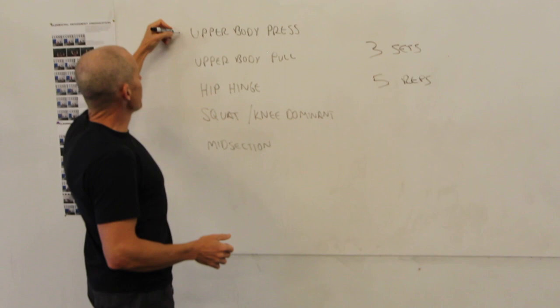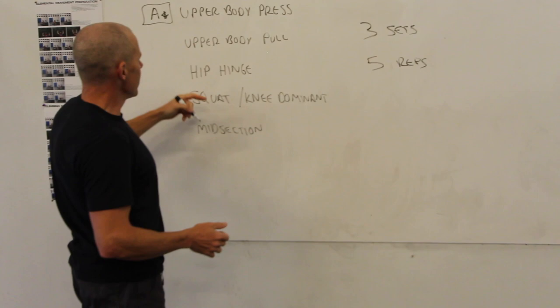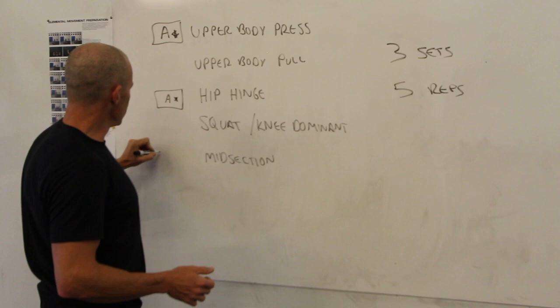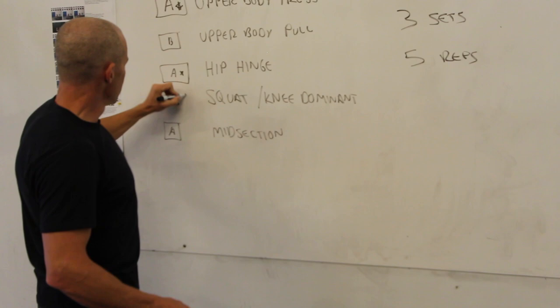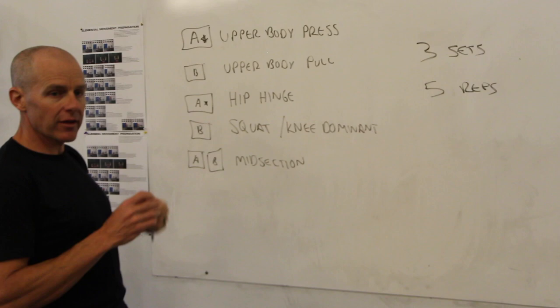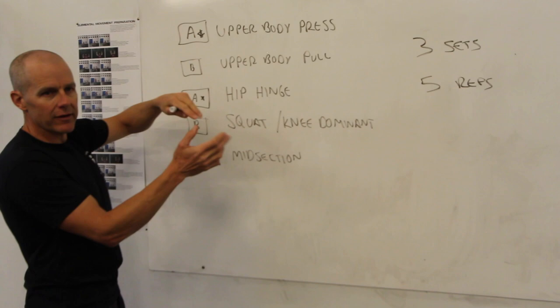Maybe we would do upper body press in our A group, and maybe the hip hinge would be in our A group too. And then you could do midsection in the A group. So on Tuesdays you might do the A exercises. On Wednesdays you might do the B exercises, and maybe we would also do a B core exercise because you can do a different one here and still not overload the pattern.